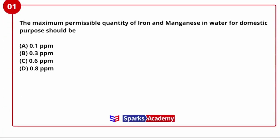The first question asks about the maximum permissible quantity of iron and manganese in water for domestic purpose. In environmental engineering, we study physical, chemical, and biological parameters. The permissible limit of iron is 0.3 ppm and for manganese it is 0.01 ppm.